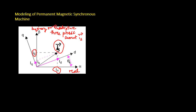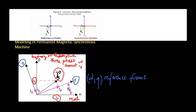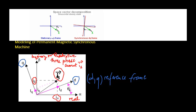Such a decomposition could be carried out with respect to different reference frames. Importantly, control strategies will be devised according to the models in the relevant reference frames. This video presents the two most widely adopted reference frames and their relationships: the stationary reference frame, also called the alpha-beta reference frame, and the synchronous reference frame, also called the DQ reference frame.